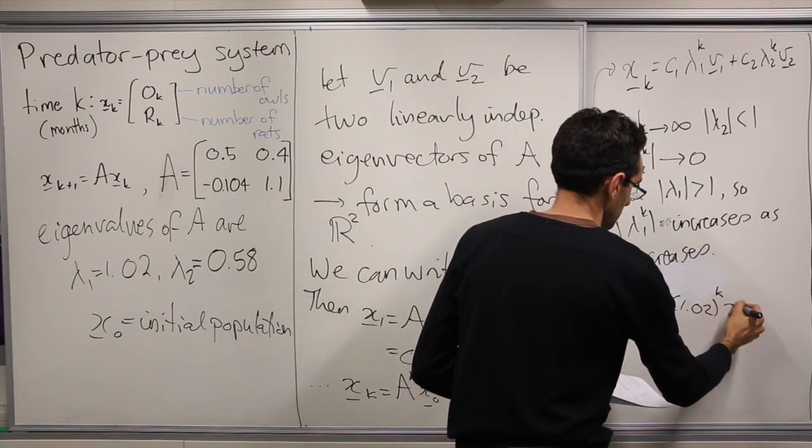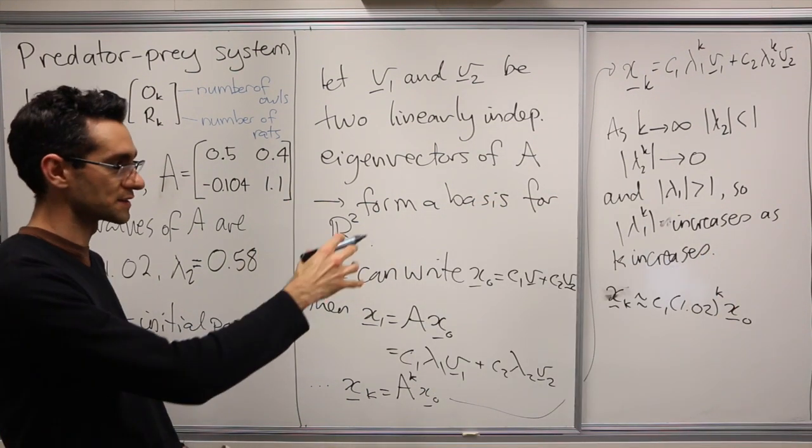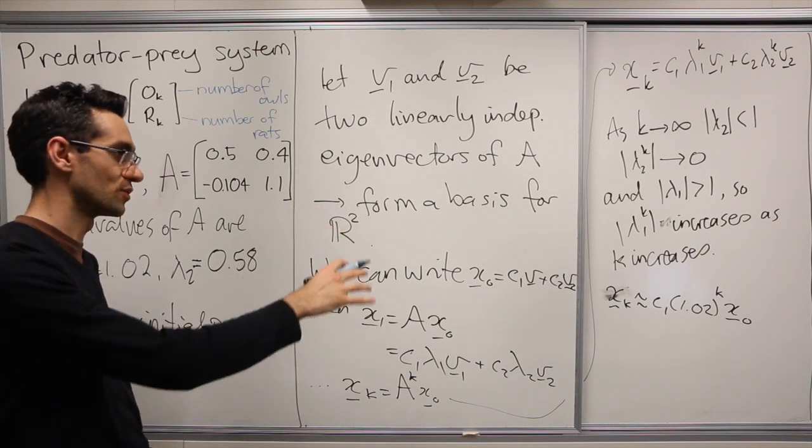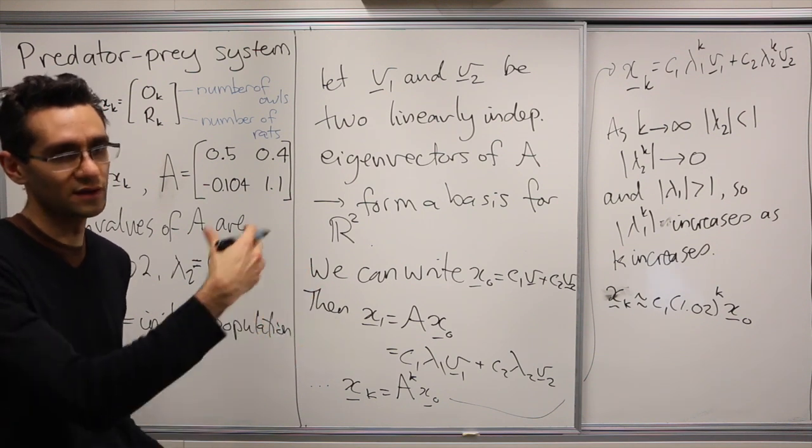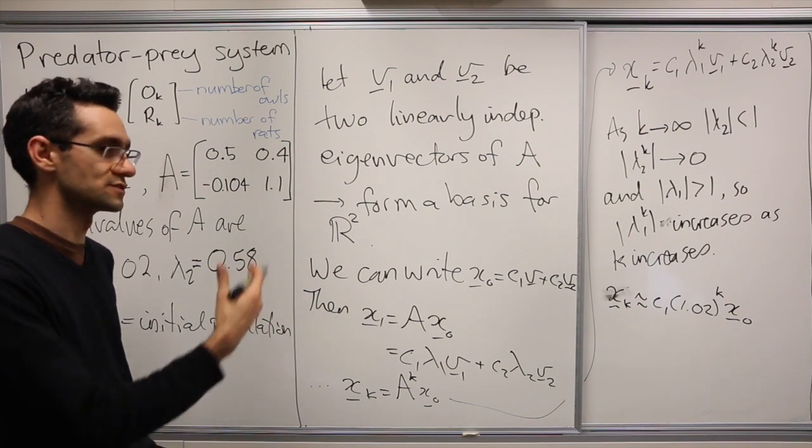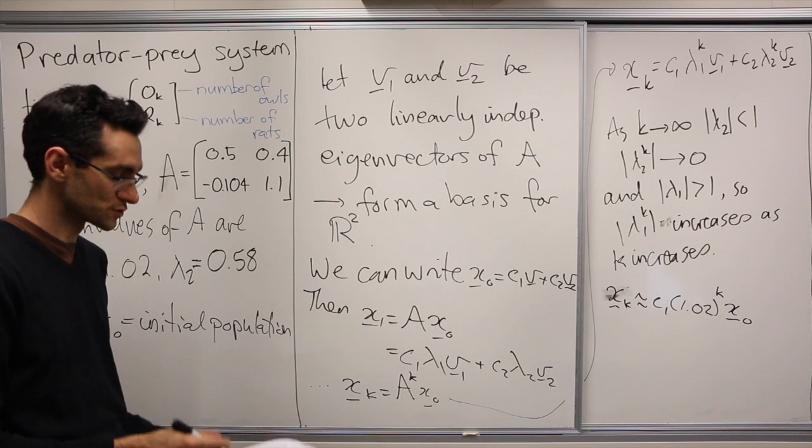So we have now xk in terms of x0 plus some initial factor c1, which is not terribly important to consider the long-term behavior. It just reflects our initial population.